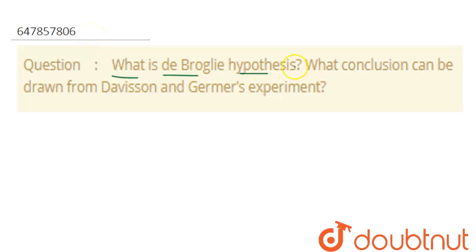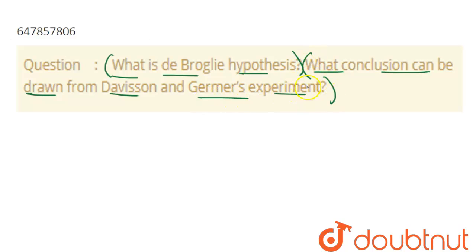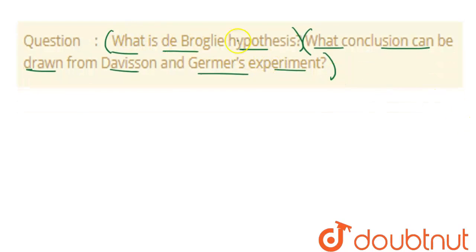Hello students. The question is: what is the de Broglie probability hypothesis? This is the first part. The second part is: what conclusion can be drawn from the Davisson and Germer experiment? So first, let's answer what is the probability hypothesis — the simple hypothesis given by de Broglie.